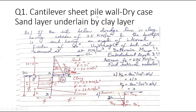It is used for temporary structures like in braced cuts, contrary to the anchored bulkhead which is used for larger depths. The construction type can be dredged or backfill type — if dredging is done before installation of the sheet pile wall it is known as dredging construction type, otherwise it is known as backfill.